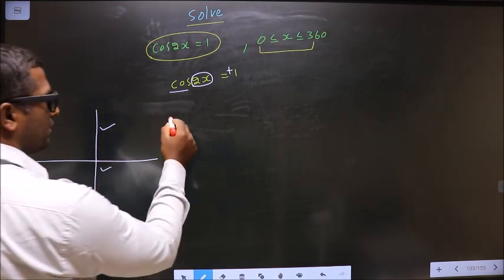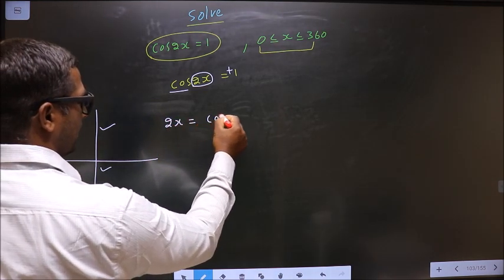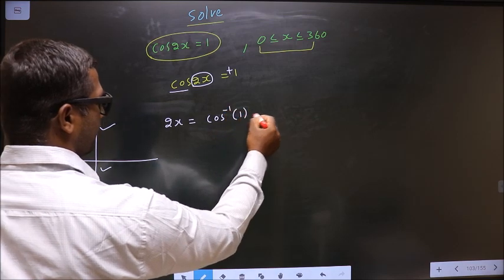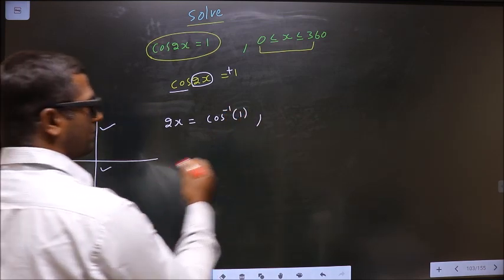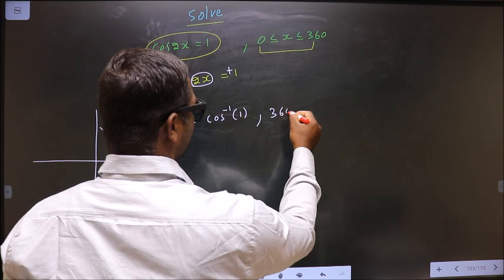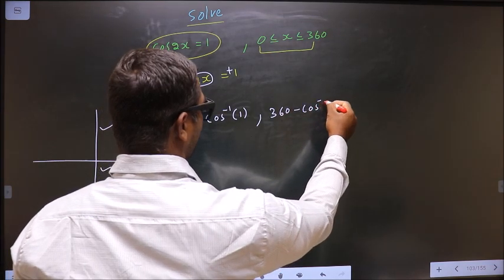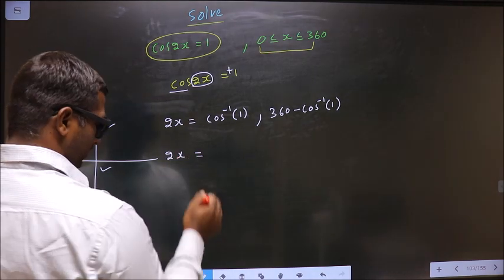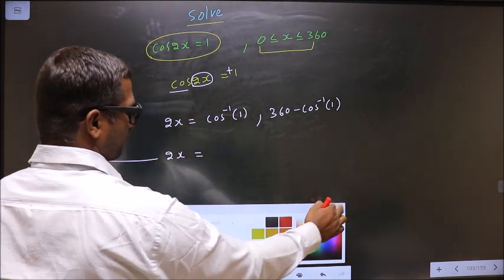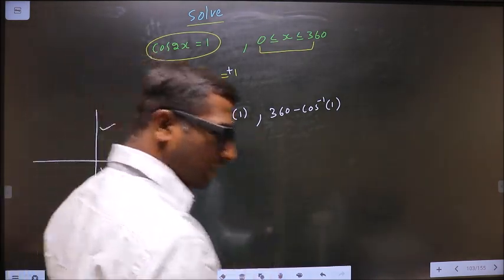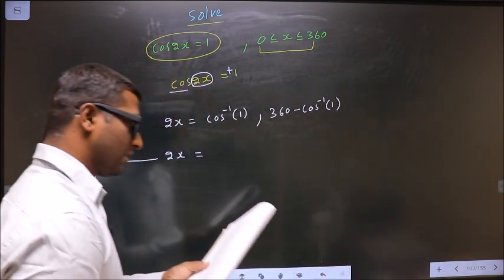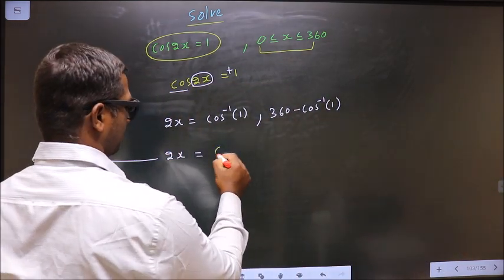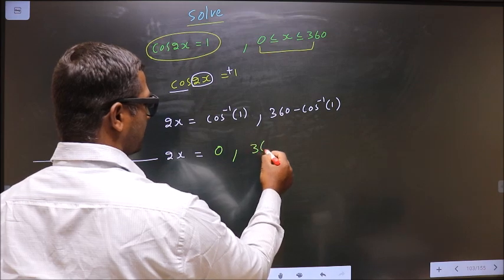So now to get an angle in the first we do directly cos inverse 1. To get an angle in the fourth we do 360 minus cos inverse 1. Calculate this you get 0. Calculate this you get 360.